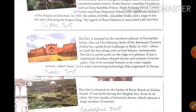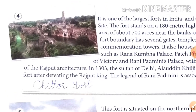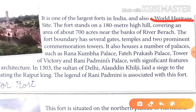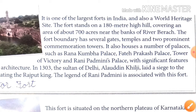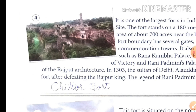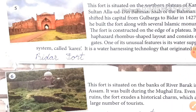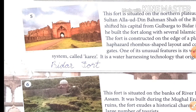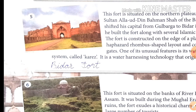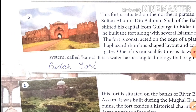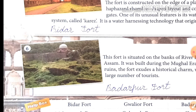Fourth fort is Chittorgarh Fort. It is one of the largest forts in India and also a World Heritage Site. Most of the pre-attack Chittorgarh Fort structures can still be seen. Fifth is Bidar Fort, situated on the Northern Plateau of Karnataka. Karnataka ke Northern Plateau mein situated hai — Bidar Fort.